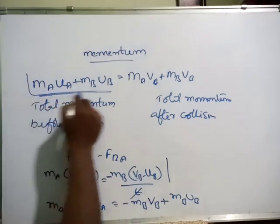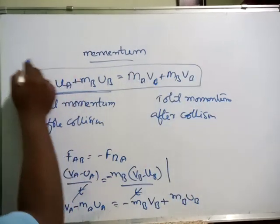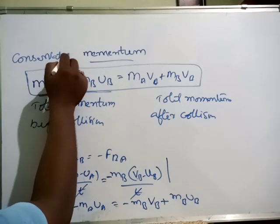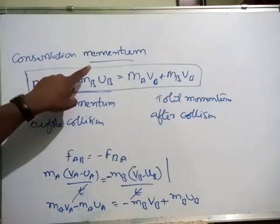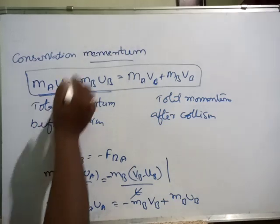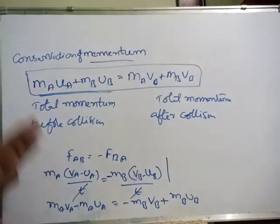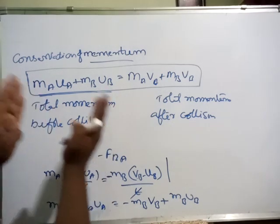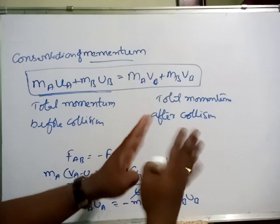This is what we call conservation of momentum. Conservation means the total momentum should be constant. Conservation of momentum means the total momentum before collision and after collision should be the same.